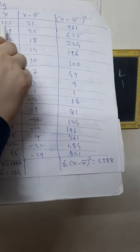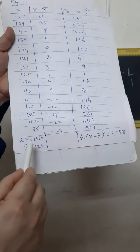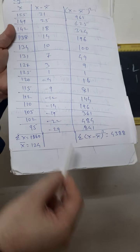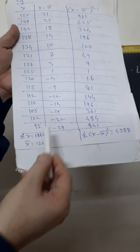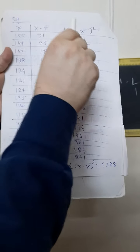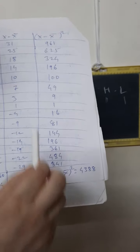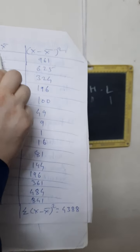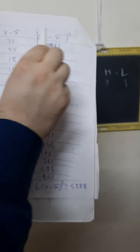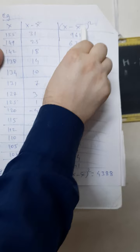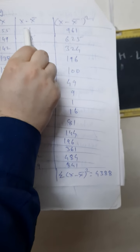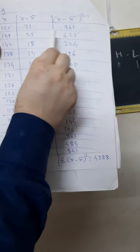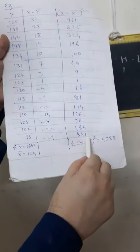Similarly, you do this for all scores. Now in the next column, we have to find the square of each deviation value. So for (x minus x-bar) squared: 31 squared = 961. 25 squared = 625. Similarly, we have to calculate the square for all these numbers.